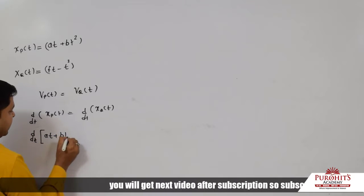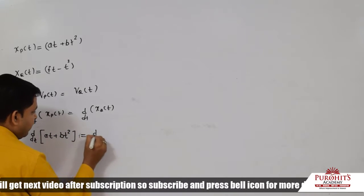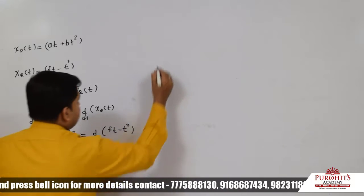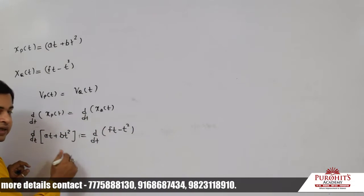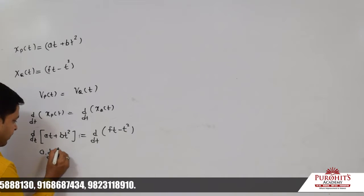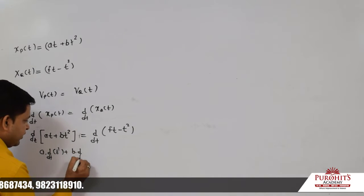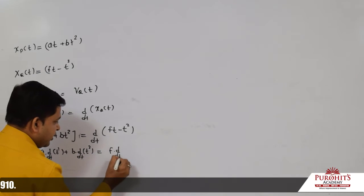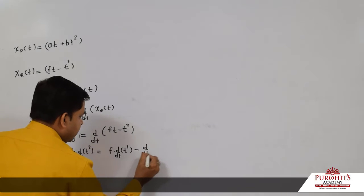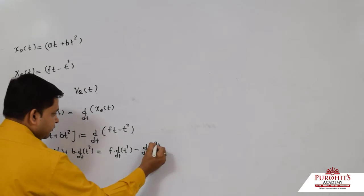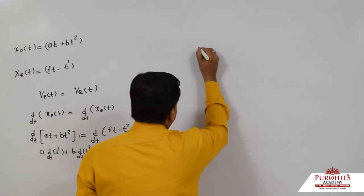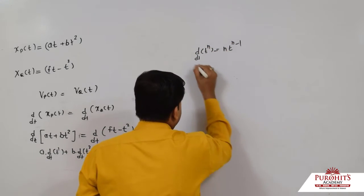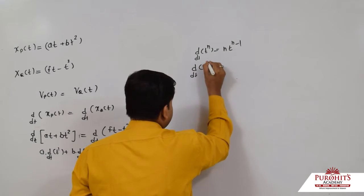Differentiate at + bt² equals differentiate ft - t². Now look: differentiation of at gives a, differentiation of t² gives 2t times b. Differentiation of ft gives f, differentiation of t² gives 2t. Using the power rule: differentiation of t^n gives n times t^(n-1).